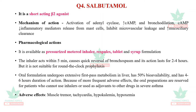Question four is a short note on salbutamol. Salbutamol is a short-acting beta-2 agonist. Its mechanism is activation of adenyl cyclase, increasing cyclic AMP, which reduces the release of inflammatory mediators from mast cells, inhibits microvascular leakage, and improves mucociliary clearance. It is available as a pressurized metered-dose inhaler, respules, tablet, and syrup. The inhaler acts within five minutes, causes quick reversal of bronchospasm, and its action lasts two to four hours.